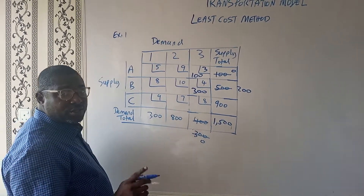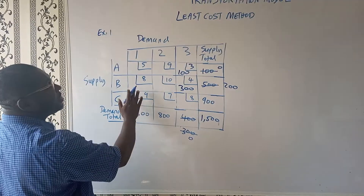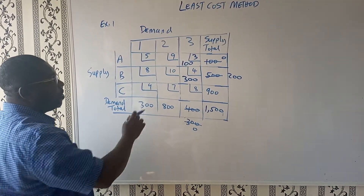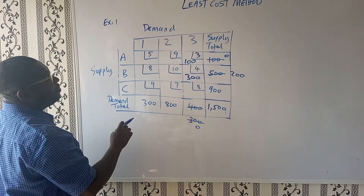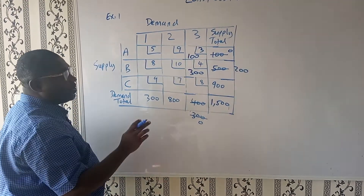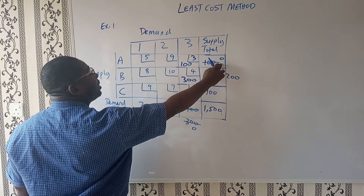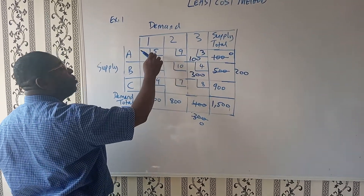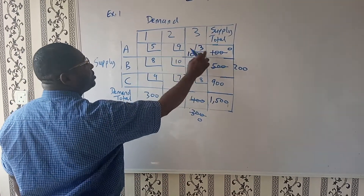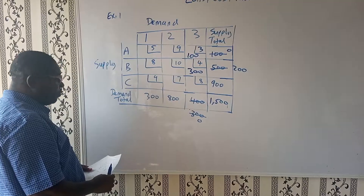Are you following? So the next thing is to look for the next least cost. The next least cost is 5. But can we get anything from 5? No, we cannot, because the supply from A has been fully exhausted — 100 has been fully used up, so we can't do anything here. We'll look for the next least cost.